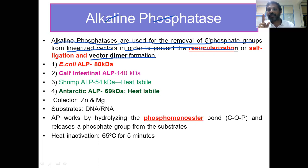When a linearized vector is dephosphorylated by alkaline phosphatase, there is no way that vector is going to self-ligate. Because if phosphate is not available, there is no phosphodiester bond.